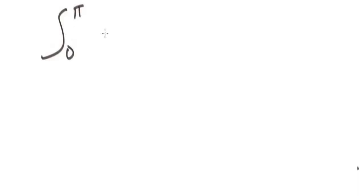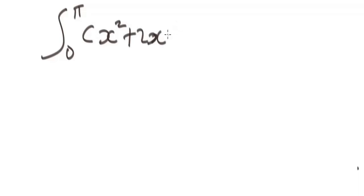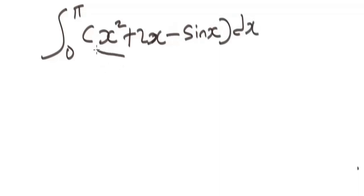Here is one more example on definite integrals. We are given a definite integral with pi as the upper limit and zero as the lower limit, and we have the expression x squared plus 2x minus sine x, all inside brackets, dx.